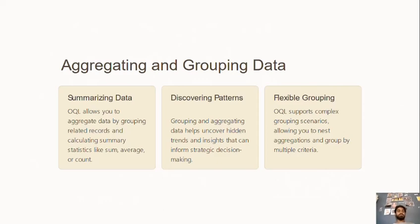Aggregation and grouping data. OQL allows us to aggregate or collect data using functions such as addition, average, count, and sum for statistical summaries. Discovering patterns: it helps us to uncover hidden or unfamiliar trends, which can help in making better strategic decisions. Flexible grouping allows complex scenarios such as nested aggregation and multiple criteria, where we can group aggregations by multiple criteria.